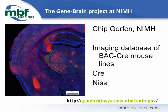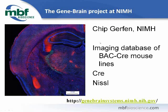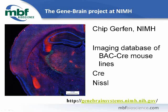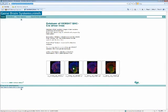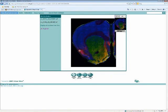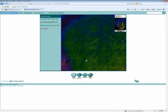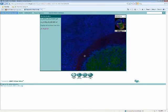I want to highlight one other way to use images created in Stereo Investigator or Neuralucida. The Gene Brain Project, headed up by Chip Gerfen at the NIMH, is an imaging database of Cre recombinant mouse lines. These are virtual tissue images of entire hemisections of mice, created into a maximum intensity projection and published on his website. You can see the difference in different recombinant lines very easily — a picture is worth a thousand words. You can zoom in on his website and look at expression patterns in the different mouse lines.